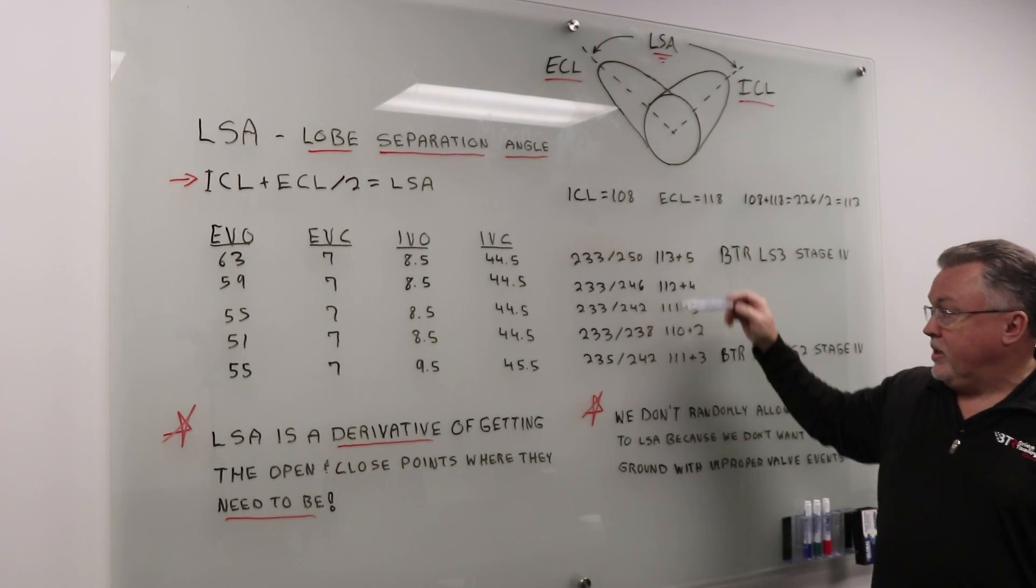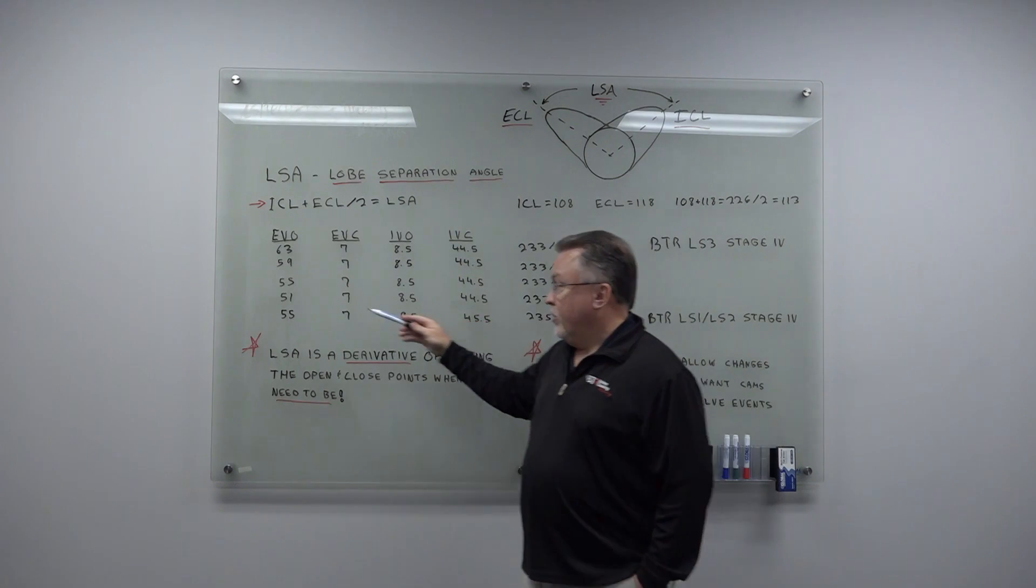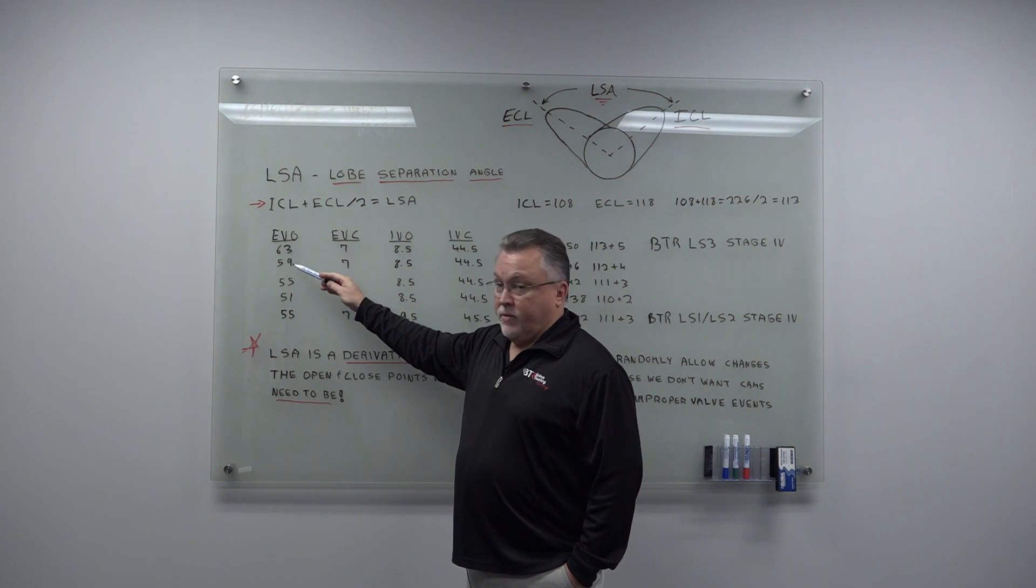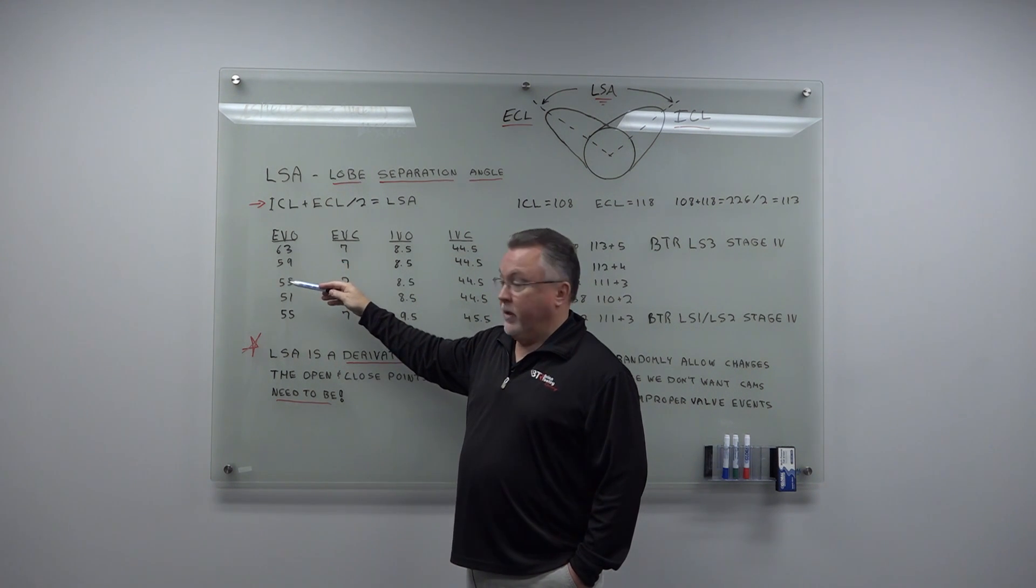However, if you test these four camshafts back-to-back on the dyno like we have, you'll find that as you add this exhaust valve open point to the camshaft, the engine makes more power from 3,500 on up.